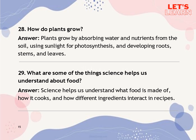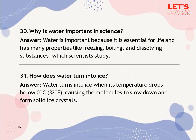Question 29: What are some of the things science helps us understand about food? Science helps us understand what food is made of, how it cooks and how different ingredients interact in recipes. Question 30: Why is water important in science? Water is important because it is essential for life and has many properties like freezing, boiling and dissolving substances which scientists study. Question 31: How does water turn into ice? Water turns into ice when the temperature drops below 0 degrees Celsius (32 degrees Fahrenheit), causing the molecules to slow down and form solid ice crystals.